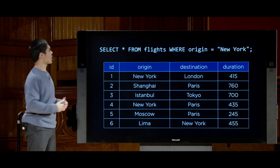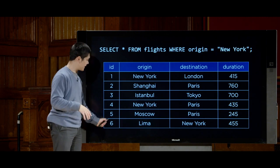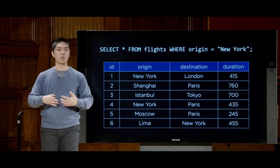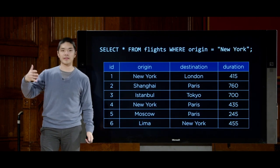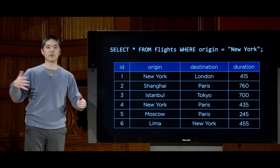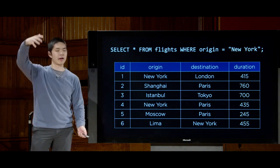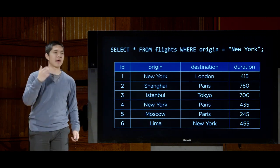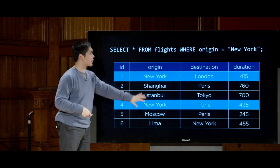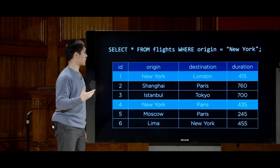You don't have to filter only on the primary key. For example, 'SELECT * FROM flights WHERE origin = ''New York''' gets all flights leaving from New York. You might imagine an airport display running exactly this kind of query to show all departures from a particular airport.